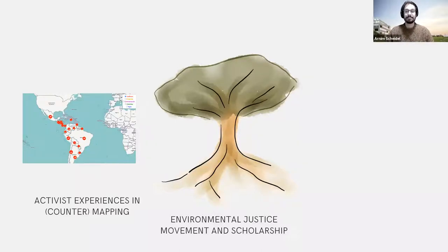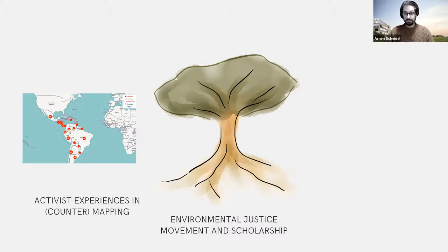The EJ Atlas could be seen as a global counter map that challenges the dominant narrative of development as usual, because it gives space to the voices of people that have been negatively affected, both in social and environmental terms.